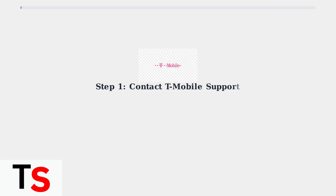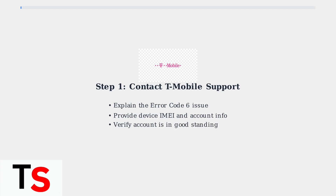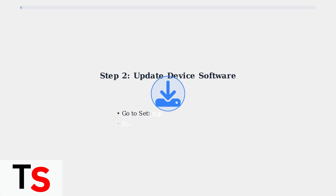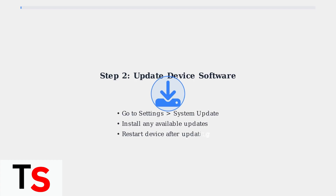When encountering Error Code 6, your first step should be contacting T-Mobile support directly. They can verify your account status and provide specific guidance for your situation. Software updates can also resolve many unlocking issues — check for and install any available system updates on your device before proceeding with other troubleshooting steps.